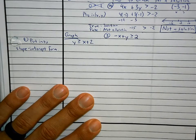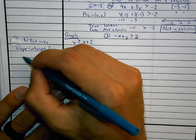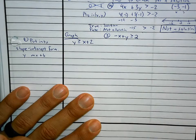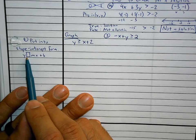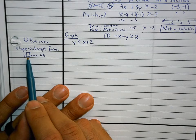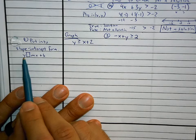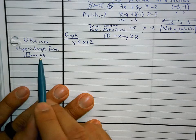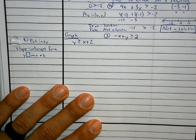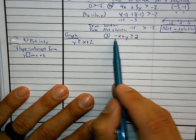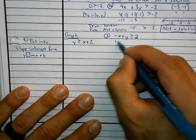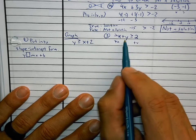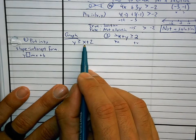The first step is to put the equation into slope-intercept form — that means get the y by itself: y equals mx plus b, but with an inequality sign instead of equals. For number three, I don't have y by itself, so I add x to the other side to get y is greater than or equal to x plus 2. That's step one.